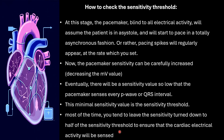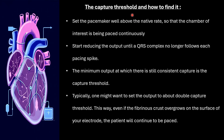Capture threshold and how to find it: set the pacemaker rate above the native rate so that the chamber of interest is being paced continuously. Start reducing the output until QRS complexes no longer follow each pacing spike. The minimum output at which there is still constant capture is the capture threshold. To adjust the pacemaker output, set it at two to three times — or double — the capture threshold. This way, even if fibrous tissue overgrowth occurs on the electrode surface, the patient will continue to be paced adequately.